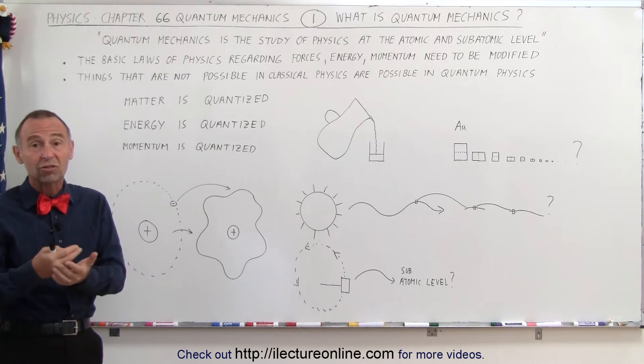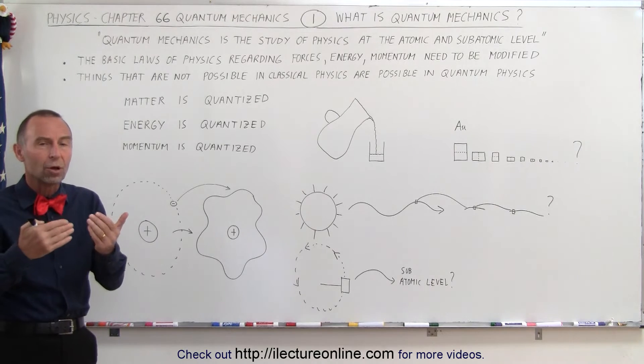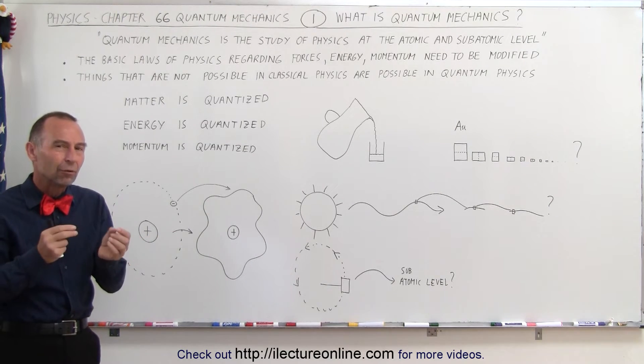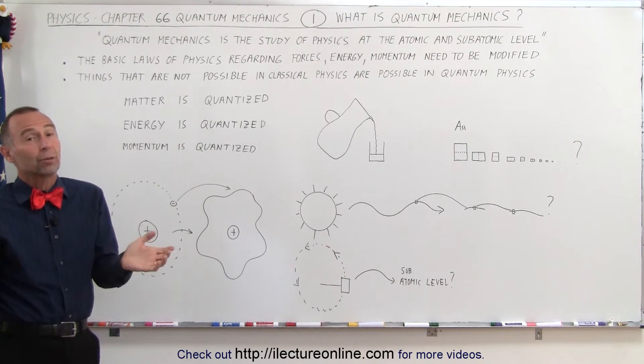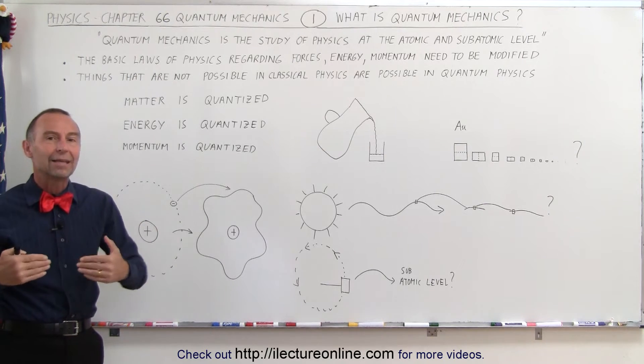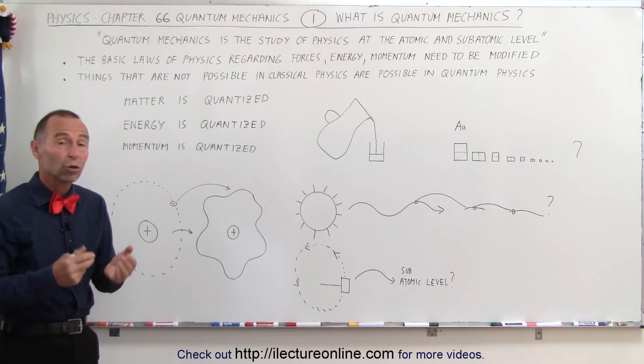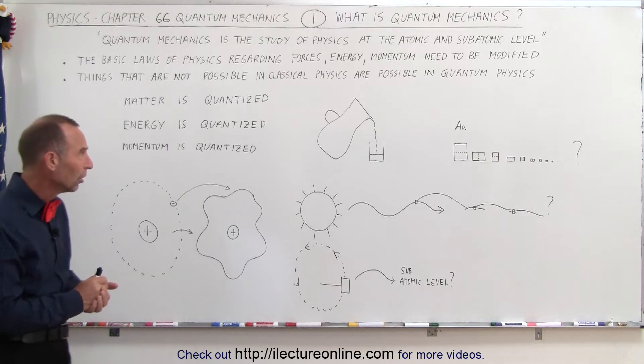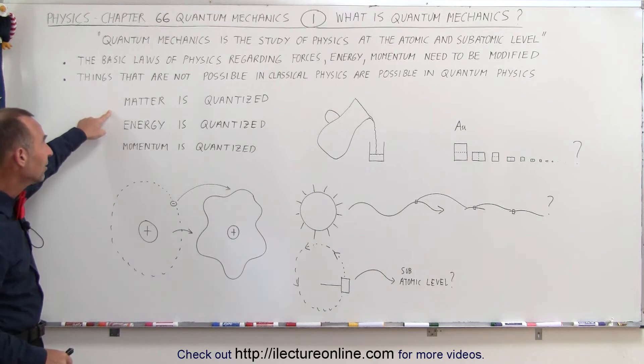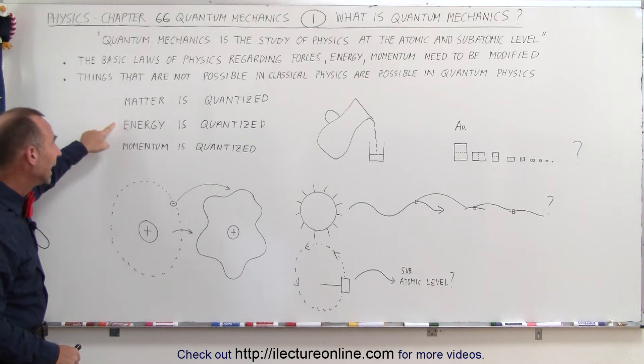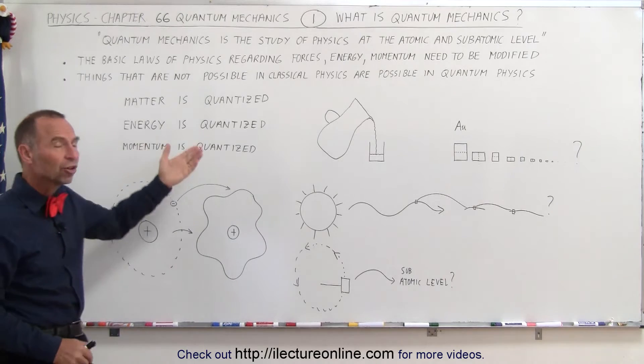And so we'll talk about things such as the Heisenberg uncertainty principle, which allow things to happen for very small amount of time that normally would not seem possible at the macro level, as we call it, the normal everyday physics level. So what we then mean is that things such as matter, energy, and momentum are actually quantized.